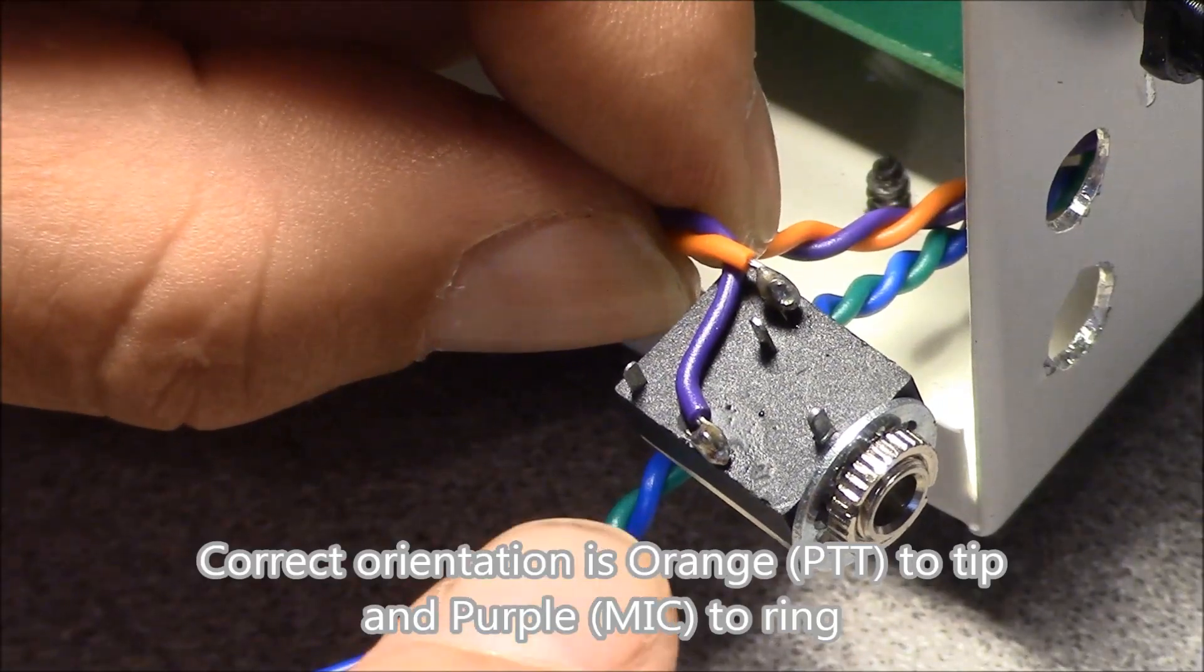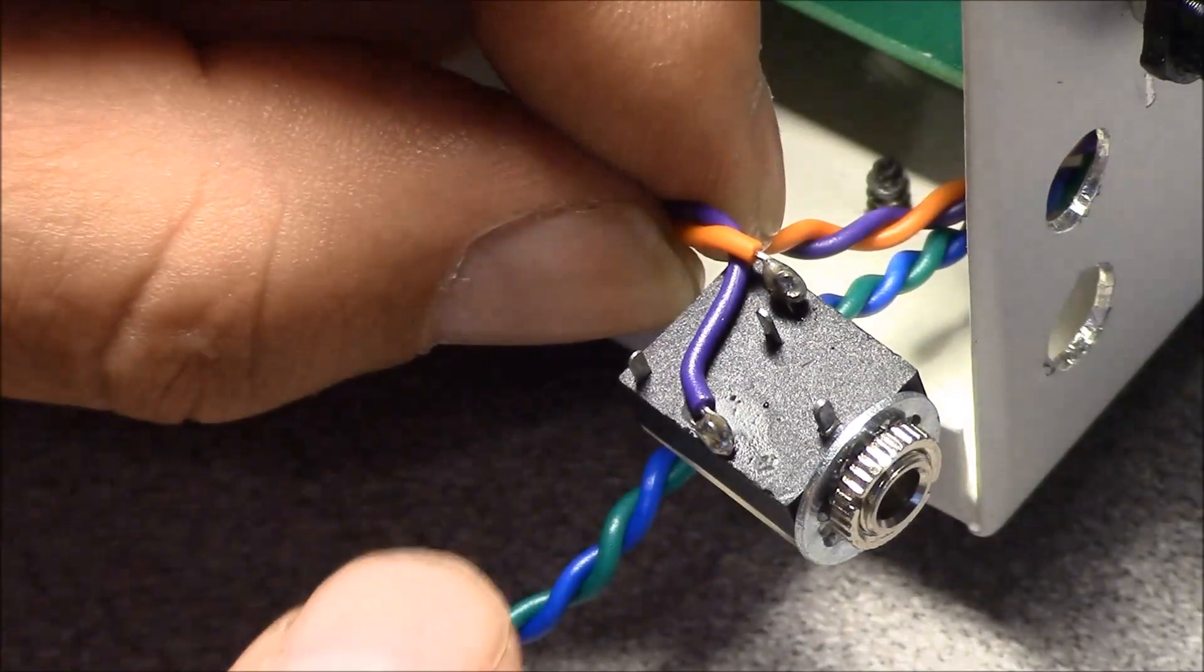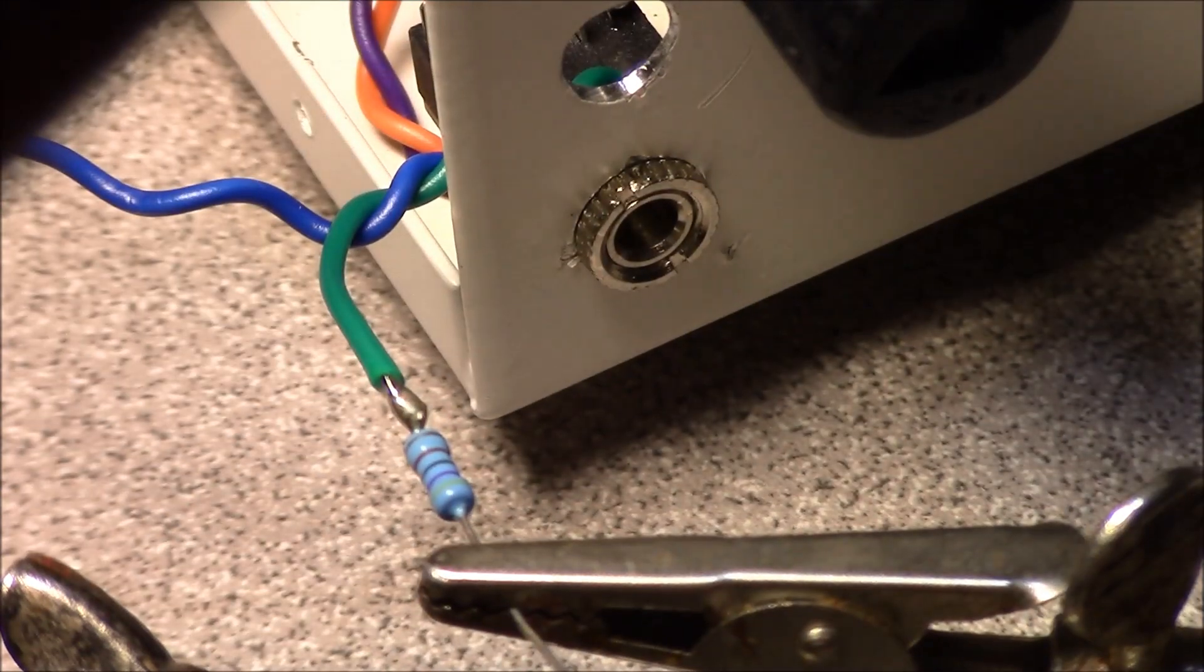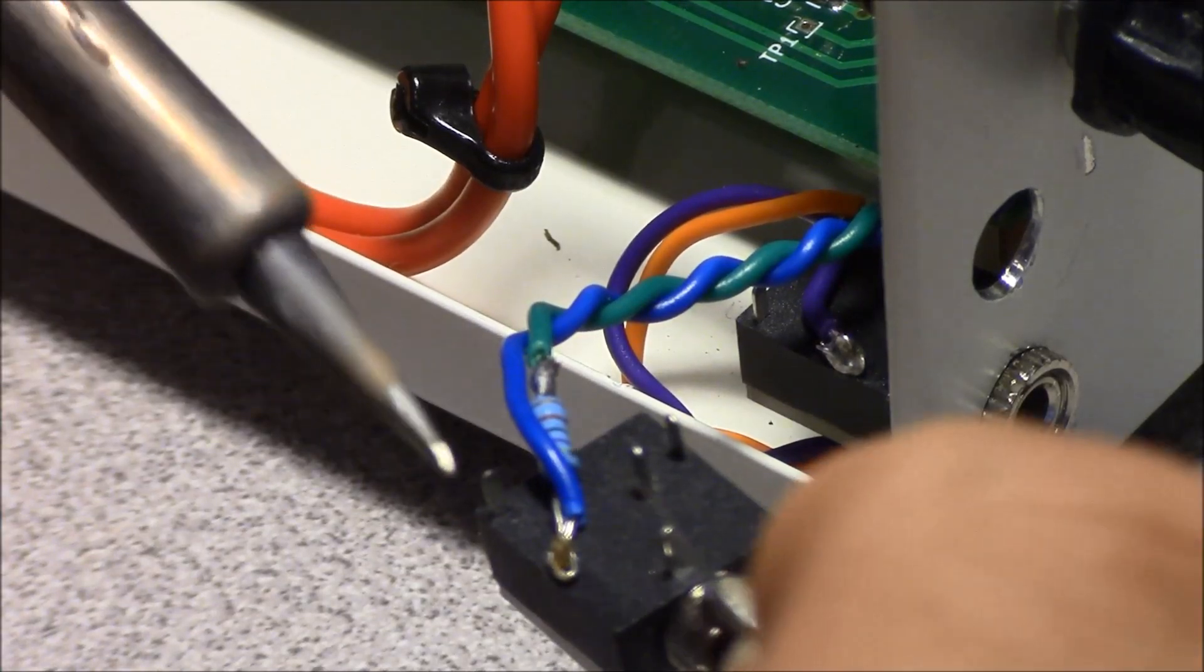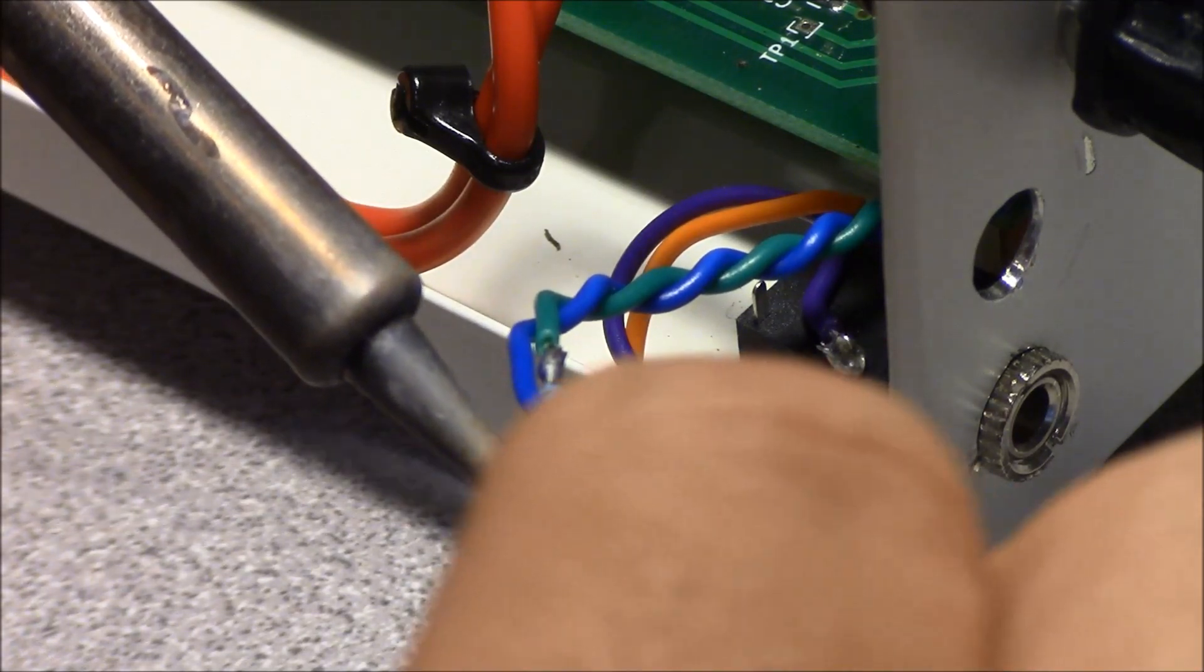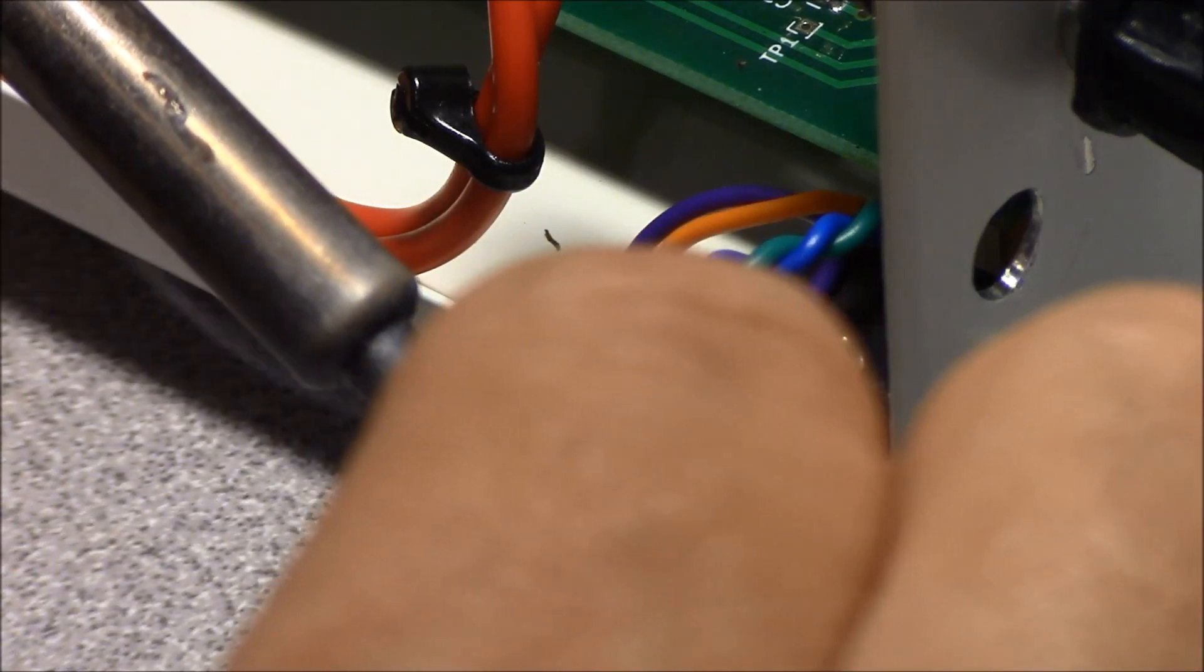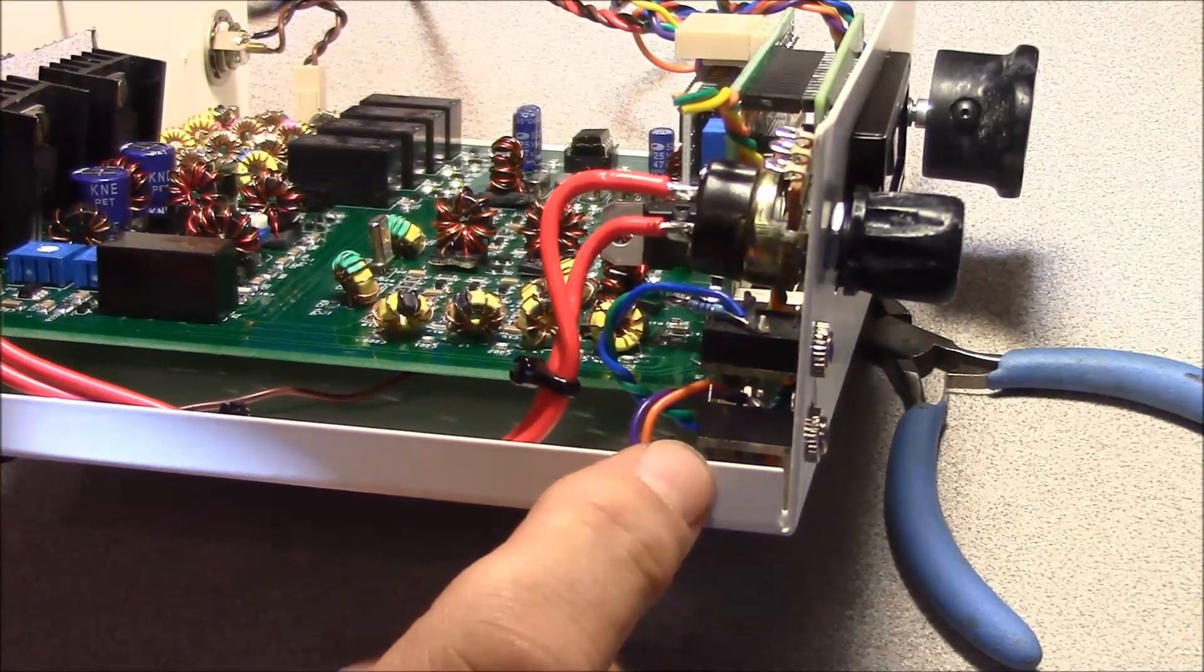Here is our microphone connector. Purple, which is our mic audio, goes to the tip. Orange goes to the ring, and that's our push-to-talk. Our Morse key requires a 4.7kohm resistor on the keyer, on the green wire. Then we bring that resistor and the blue wire to the tip. We have our key and our microphone both connected now.